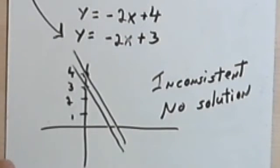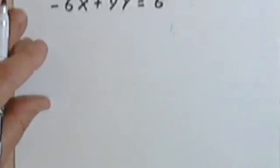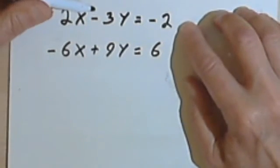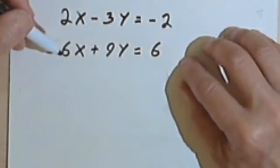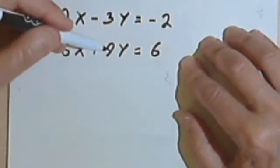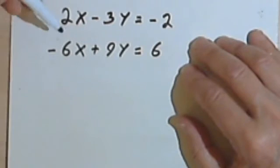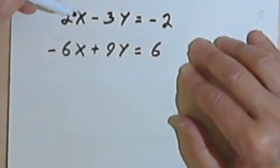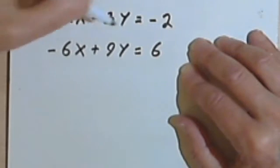So consistent equations have one solution, inconsistent equations have no solution, and now we've got a third type of system. Let's see what happens with this. Here we've got 2x minus 3y equals negative 2, and we've got negative 6x plus 9y equals 6. So let's say you looked at these and you said, oh, I'll solve this by elimination, since I've got a 2x, which I could multiply by 3, and get a 6x, and then I'd have a negative 6x, and I could add these two equations together, and the x's would cancel. So let's do that.